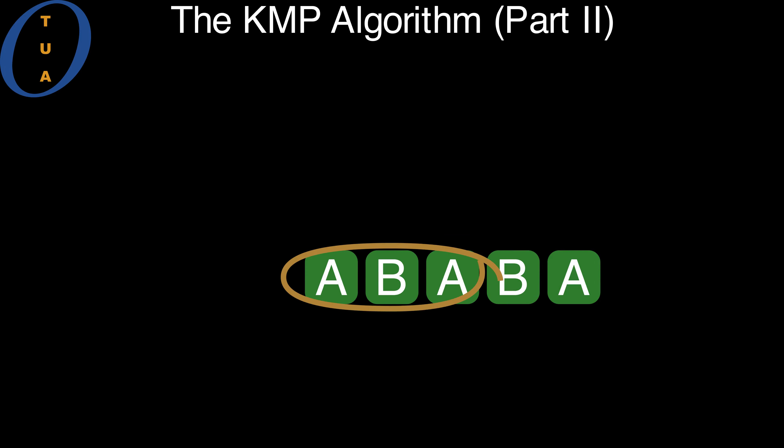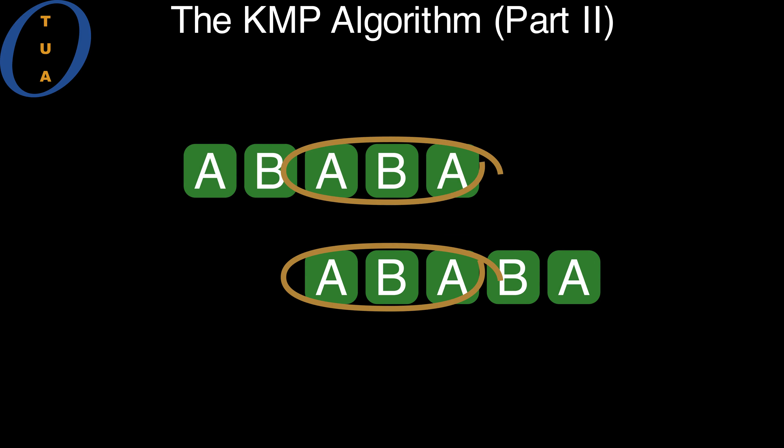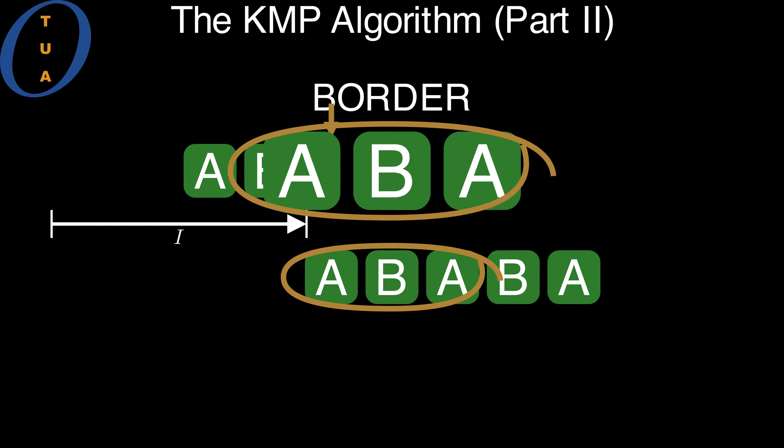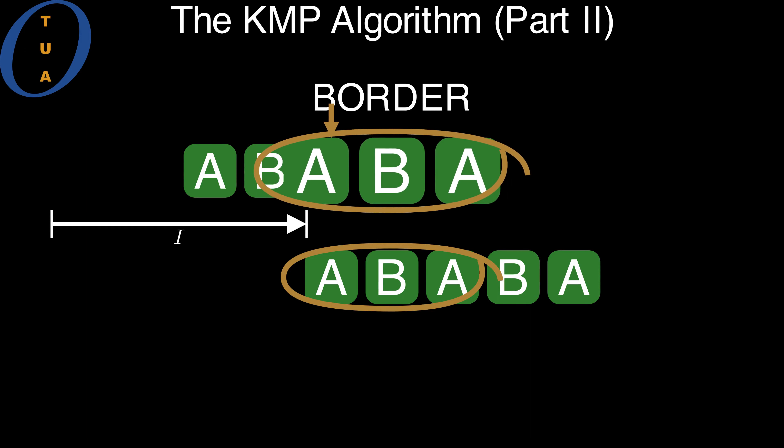Such a prefix of the overlap, that also happens to be a suffix, is called a border. Our offset is special because a border of the overlap, seen as a suffix in the text, is aligned with the corresponding border in the pattern.